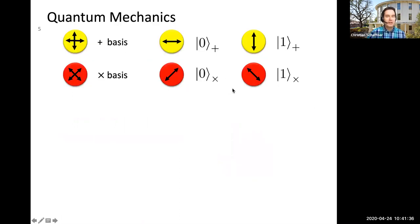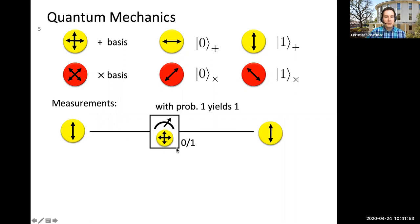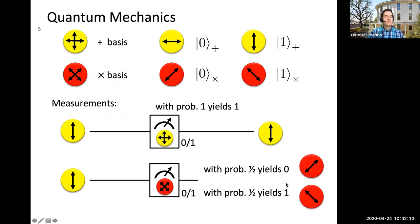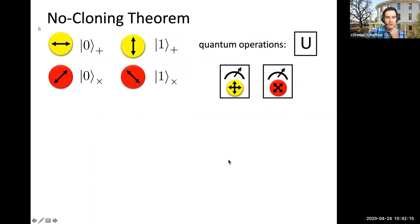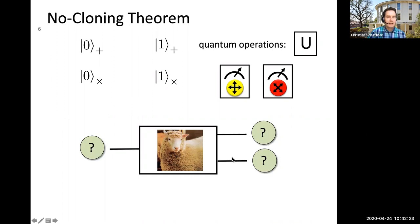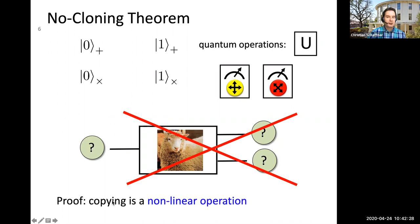Starting with notation: we have our familiar BB84 states — two bases used for the Bennett and Brassard QKD protocol. If you measure in the right matching basis you see what the state is; if you measure in the wrong basis you get a random bit and collapse the state. We also saw the no-cloning theorem: you cannot clone one of these four states at random, because cloning would be a nonlinear operation, and only linear operations are allowed by quantum mechanics.